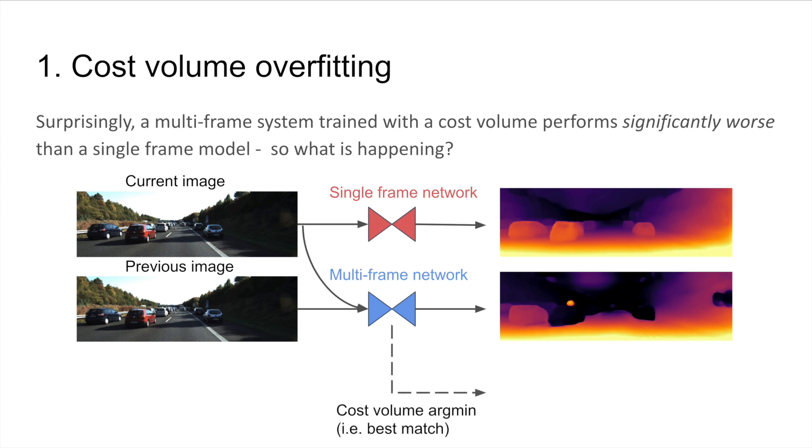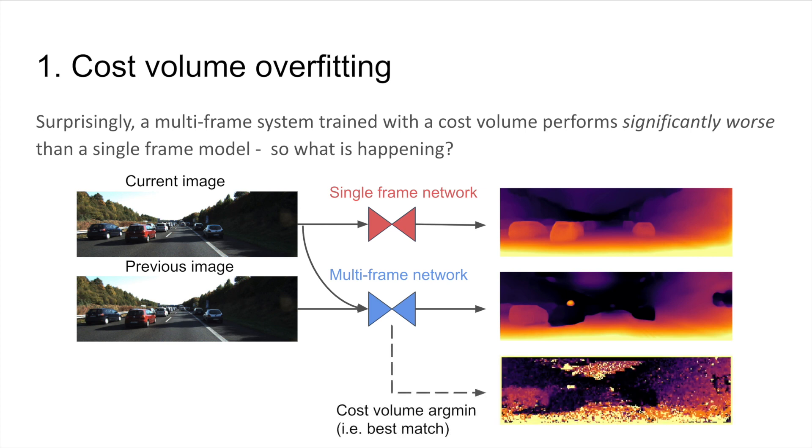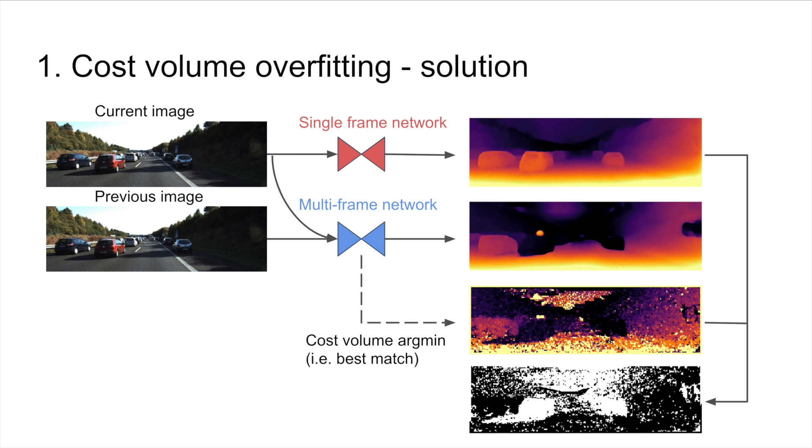Now, let us look at the argmin of the cost volume, and we can immediately see that our trained network has inherited all of the mistakes of the cost volume, relying on it too much. To solve this, we propose utilizing a single image network as a teacher, enforcing consistency in regions for which the cost volume cannot be trusted, identified by our motion mask seen in the bottom right.